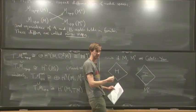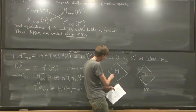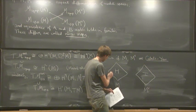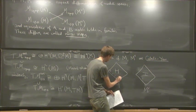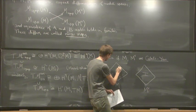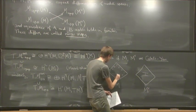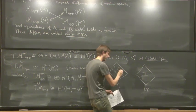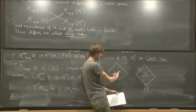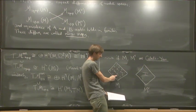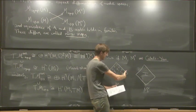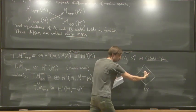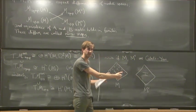For Calabi-Yau threefolds, the Hodge diamond basically has 1, 0, 0, 1, then H^{1,1} and H^{1,2} by Serre duality and complex conjugation. When you look at the values of H^{1,1} and H^{1,2} you see this symmetry, because the reflection exchanges them. The answer to the question about dimensions of moduli spaces is these dimensions of cohomology groups. In practice, mathematicians only know how to prove things in a formal neighborhood of some singular point in these moduli spaces, treating them as formal schemes — formal neighborhoods of a point — though the philosophy is that it should extend much more generally.